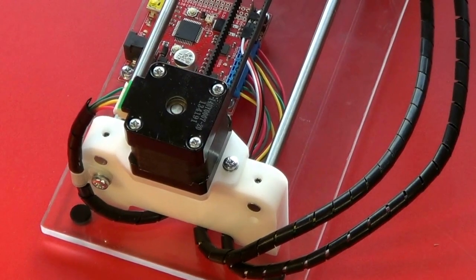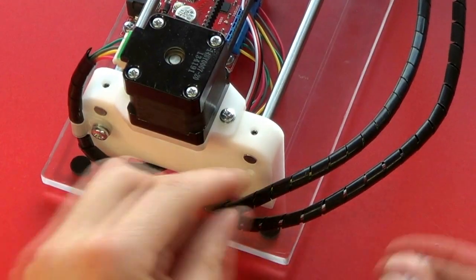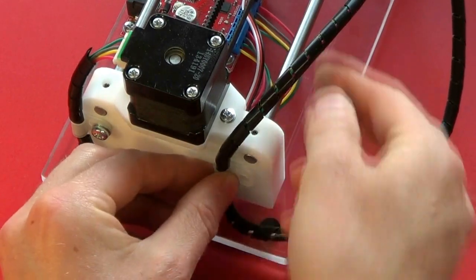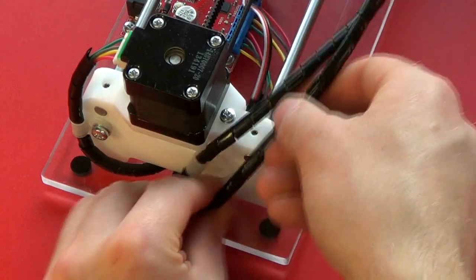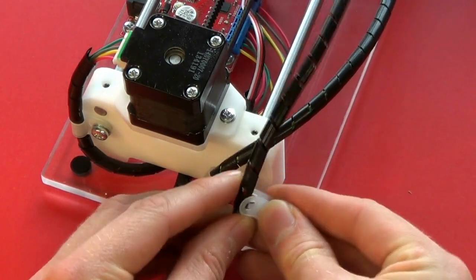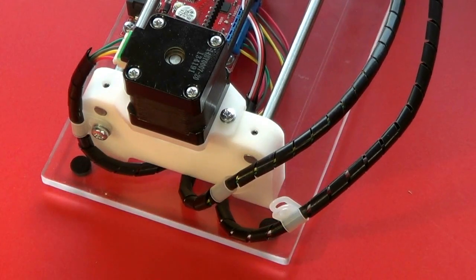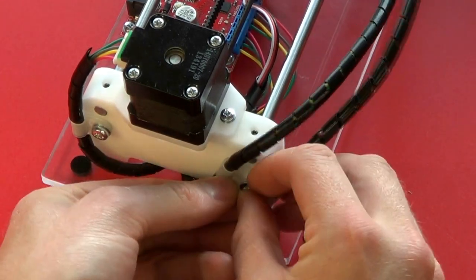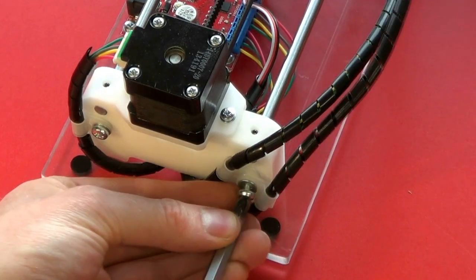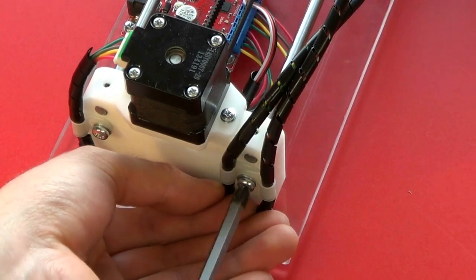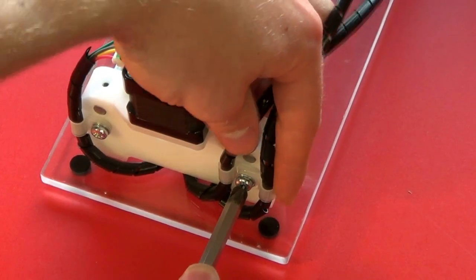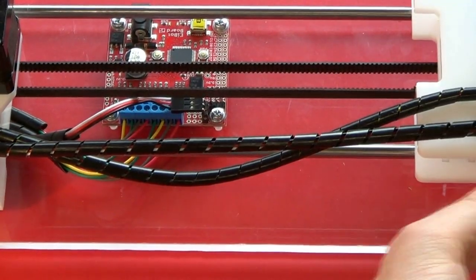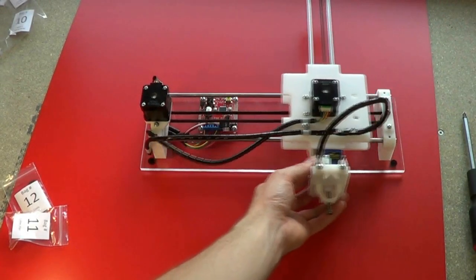So both of these are going to be attached to the same point with the cable clips again. One there, one there, one there, and one there. Clamp them so the cables are vertical. Check the travel of the carriage again. It still moves freely.